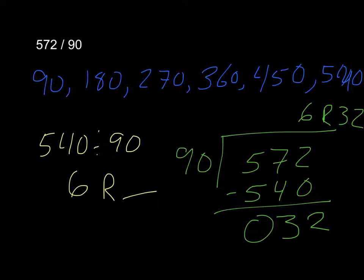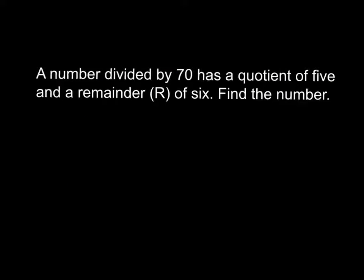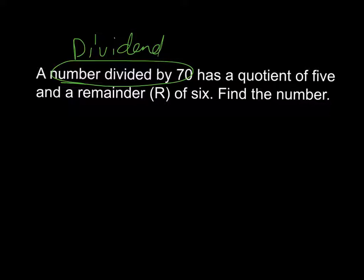Let's try one last problem. I want you to try this one on your own first. A number divided by 70 has a quotient of 5 and a remainder of 6. Find the number. The first thing I'm going to do is circle the important pieces. A number divided by 70, that's talking about my dividend. A quotient of 5. And a remainder of 6.